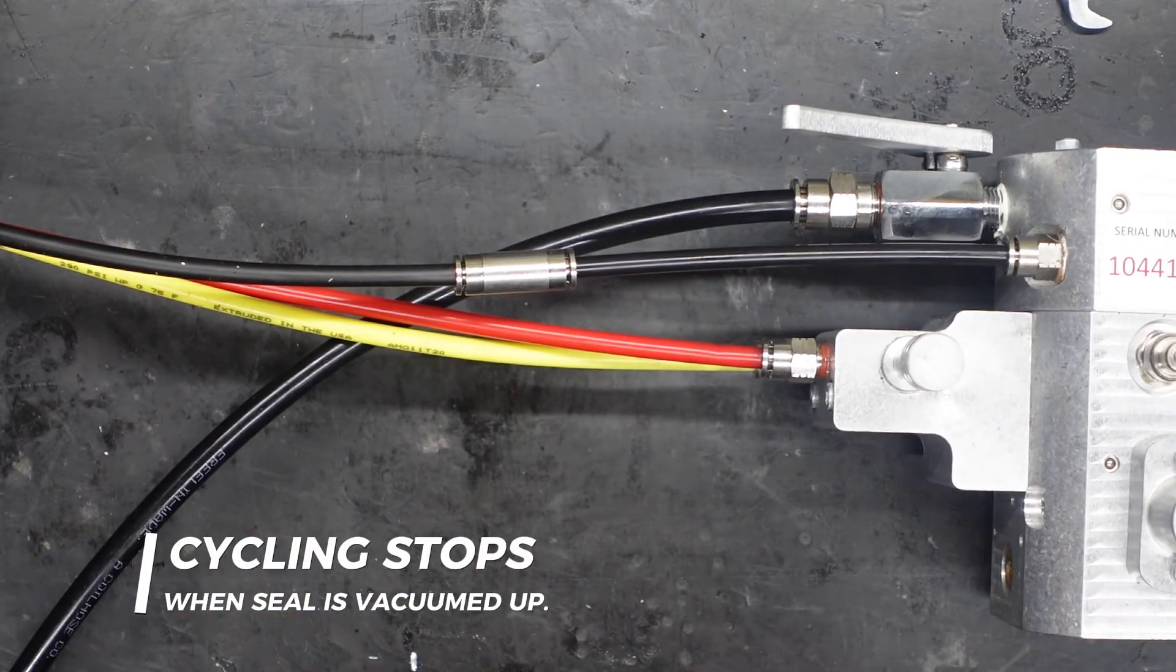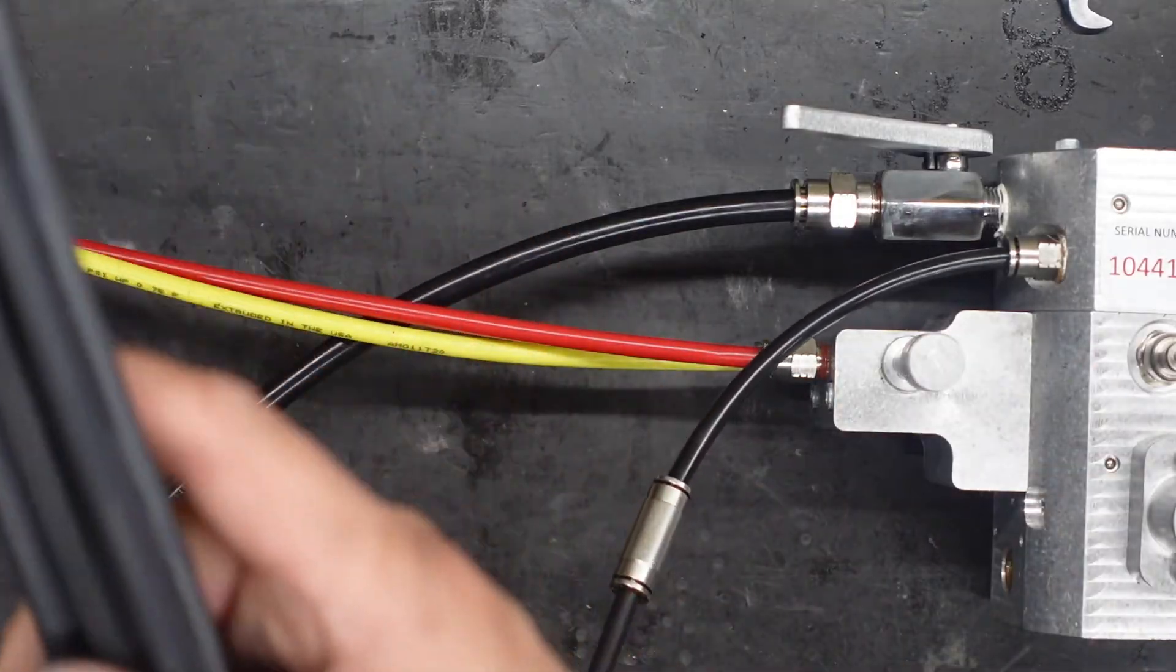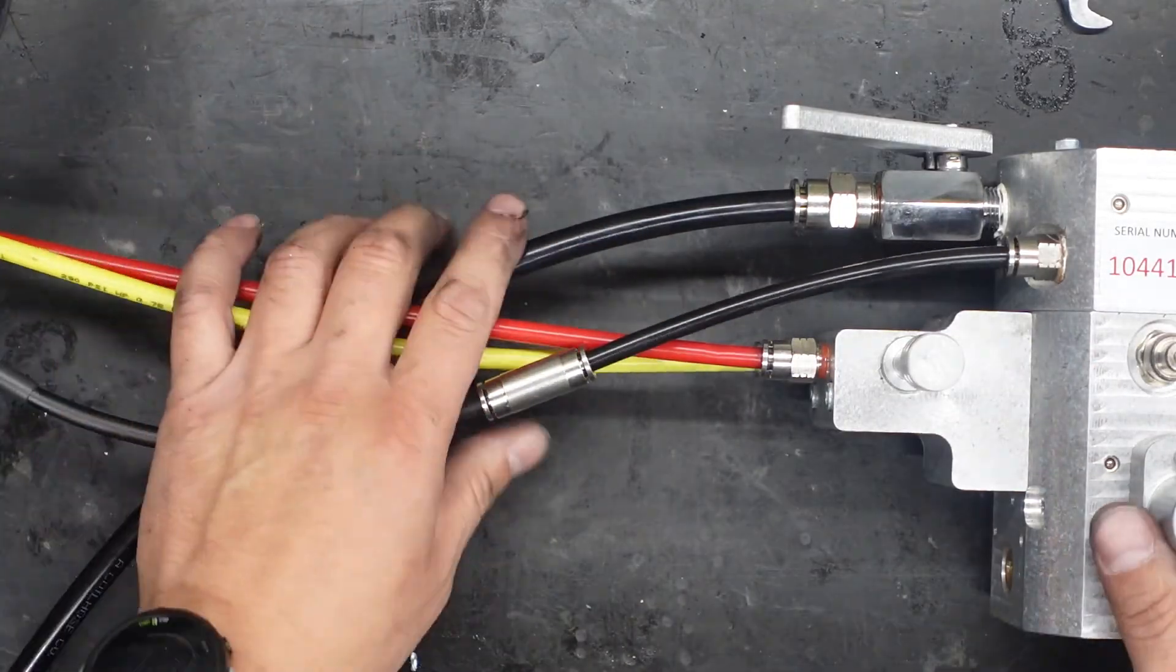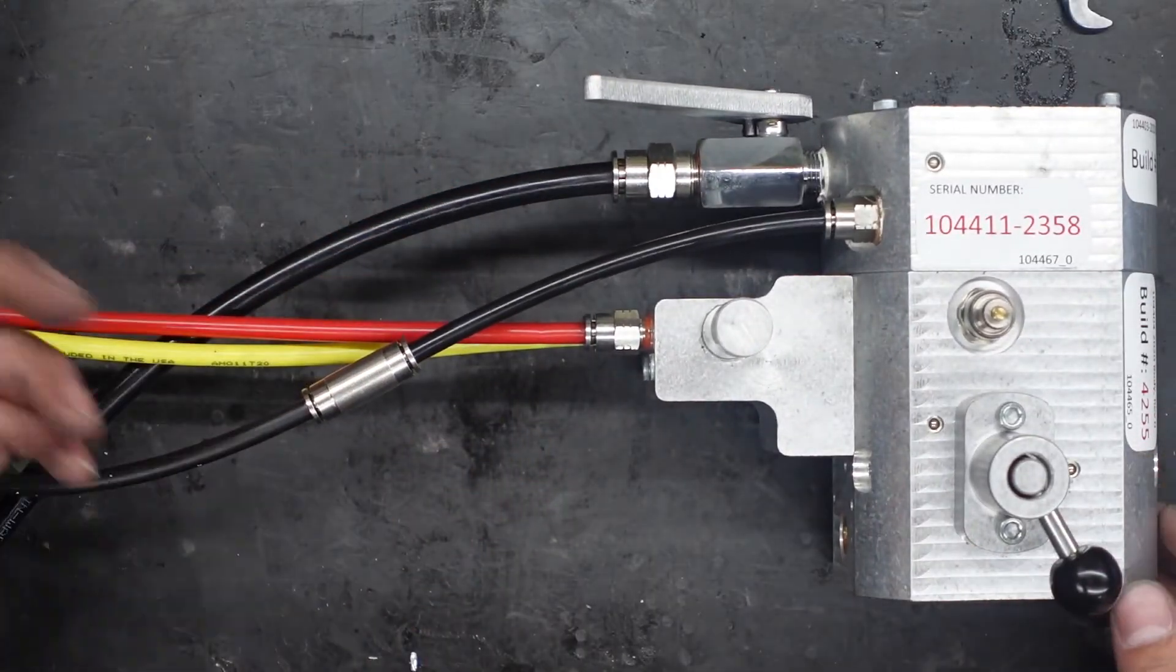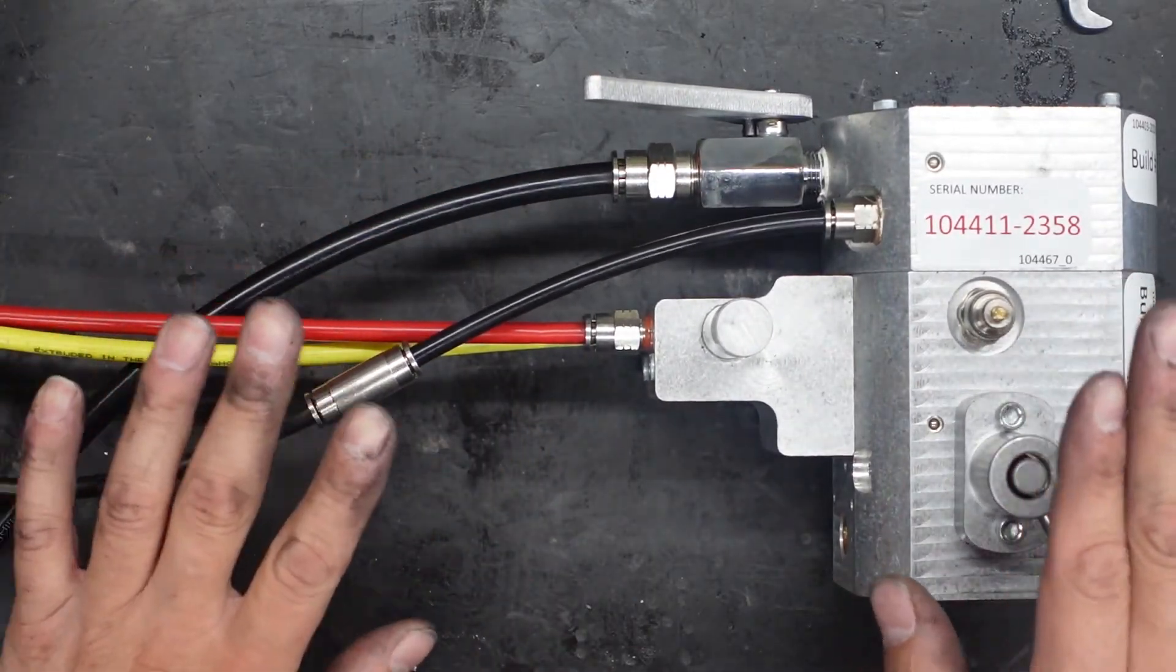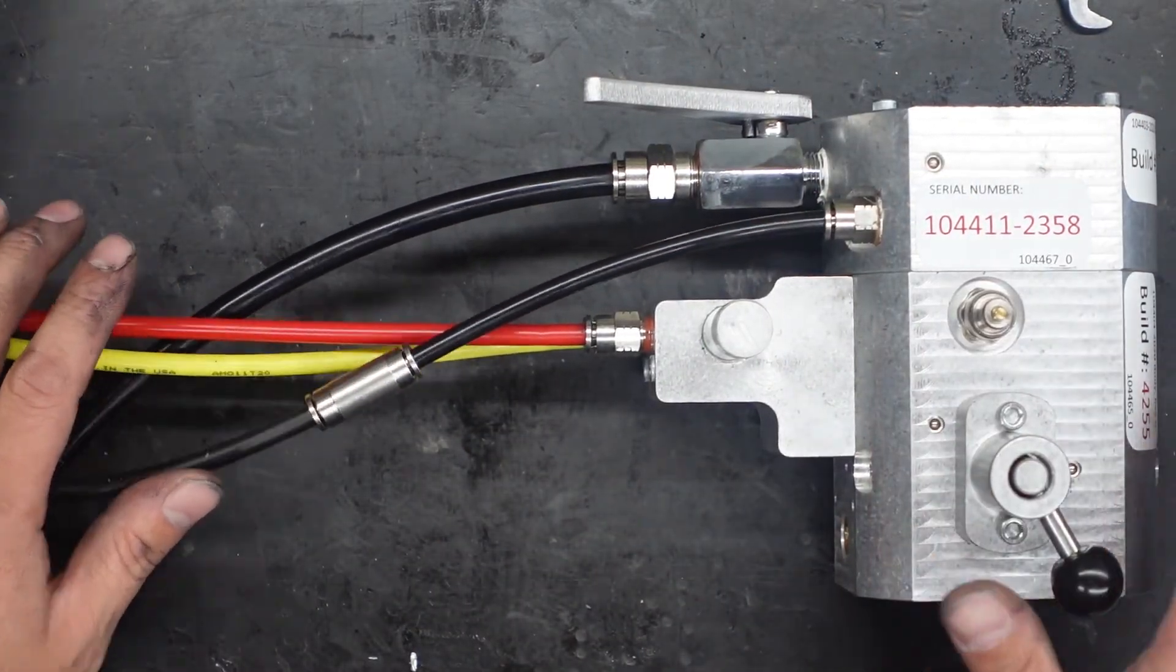That's about how long it should take to vacuum out all the air out of that seal. A little longer because it's got 50 feet of airline as I only have a foot here. But if it continues cycling after that we have another issue we need to look at. If it stops then it is working properly.